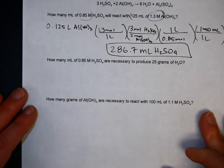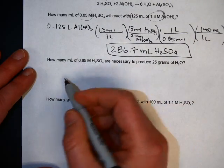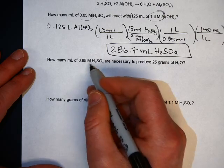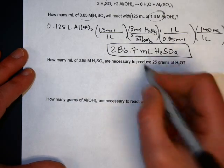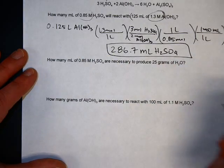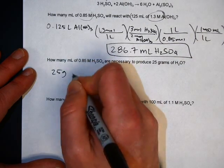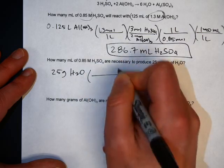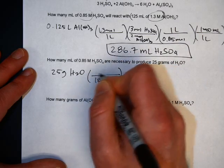And the second problem we've got here. Same reaction. How many milliliters of 0.85 molar sulfuric acid are necessary to produce 25 grams of water. Again, don't start with the capital M number. Start with the grams. This is a mass to liters problem. So 25 grams of water. And the molar mass of water is 18 grams per mole.